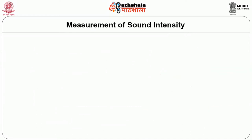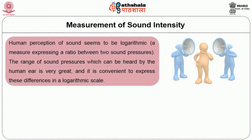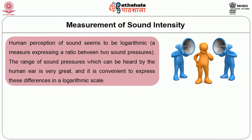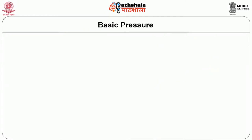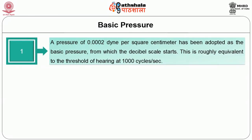To follow the underlying aspects we should have a know-how on how sound is measured. Human perception of sound seems to be logarithmic — a measure expressing a ratio between two sound pressures. The range of sound pressures which can be heard by the human ear is very great and it is convenient to express these differences in a logarithmic scale. The unit normally used is the Bell, which is a logarithm of a ratio of 10, but the most common and convenient measure of sound intensity is the decibel, where the Bell is divided into 10 parts. Therefore, a decibel is equal to 1/10th of a Bell. A pressure of 0.0002 dyne per square centimeter has been adopted as a basic pressure from which the decibel scale starts. This is roughly equivalent to the threshold of hearing at 1000 cycles per second.